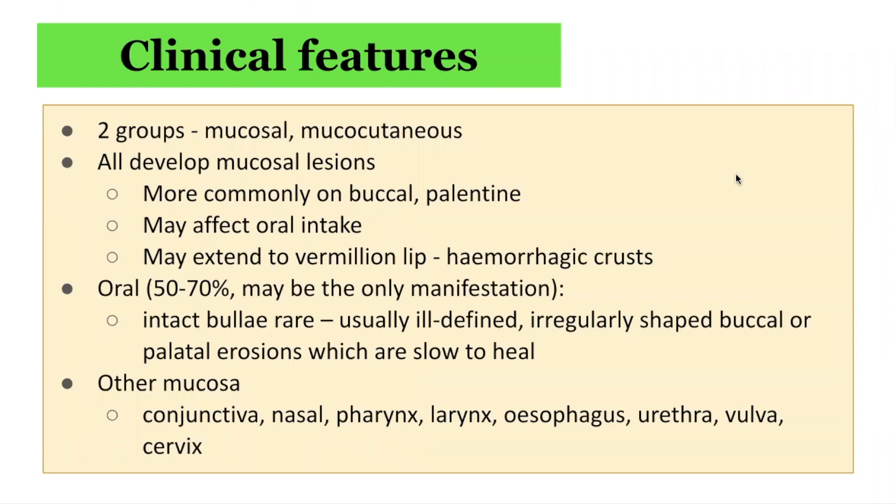Lesions can also extend to the vermilion lip and result in hemorrhagic crusting. Oral presentation occurs in 50–70% of cases, but it may be the only presentation. Intact bullae are quite rare; they are usually ill-defined and irregularly shaped in the buccal or palatal areas, forming erosions which are slow to heal.